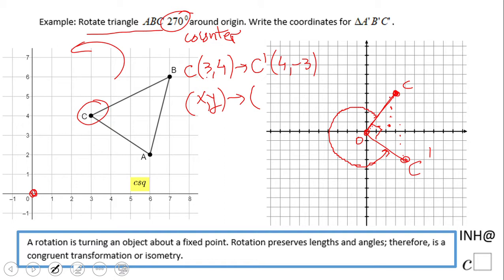sign. This is the rule for rotating 270 degrees counterclockwise: (x, y) → (y, -x). So let's use the rule for finding the other points. Point A, which is (6, 2), becomes A prime. Again, we're going to take the y first and we're